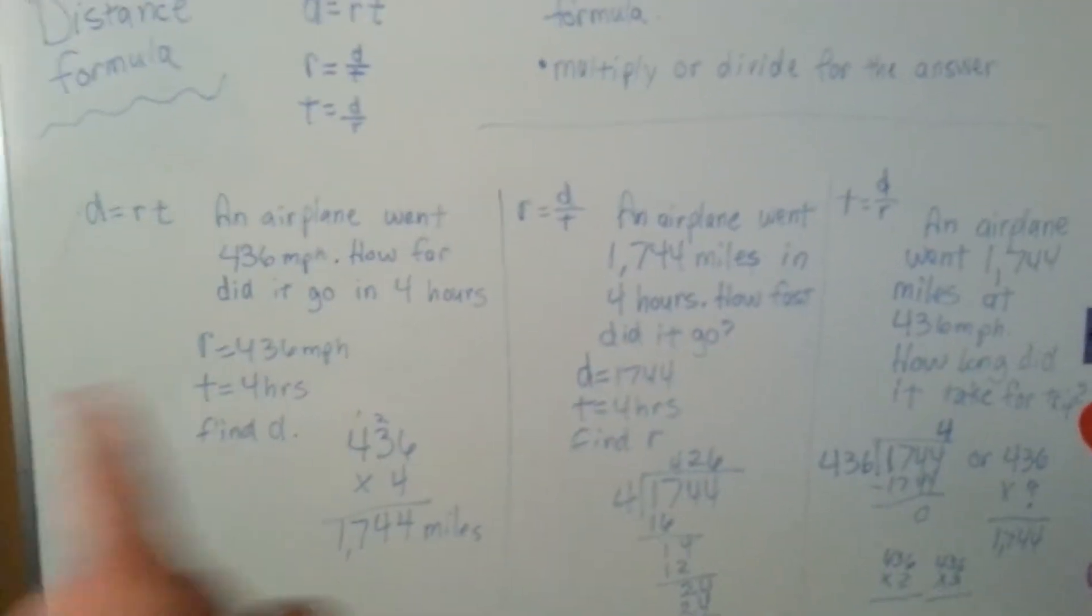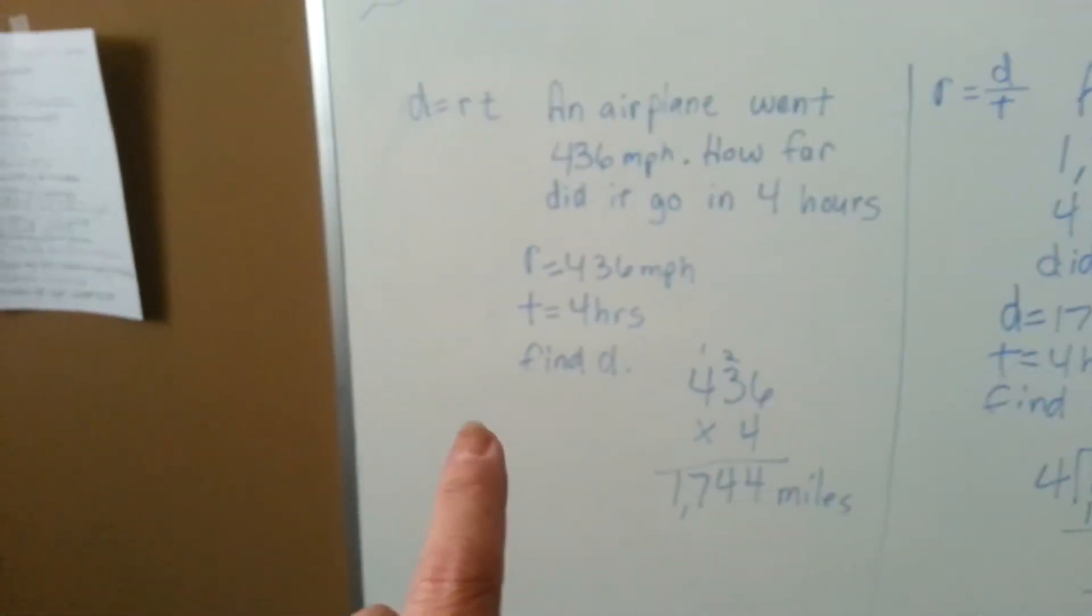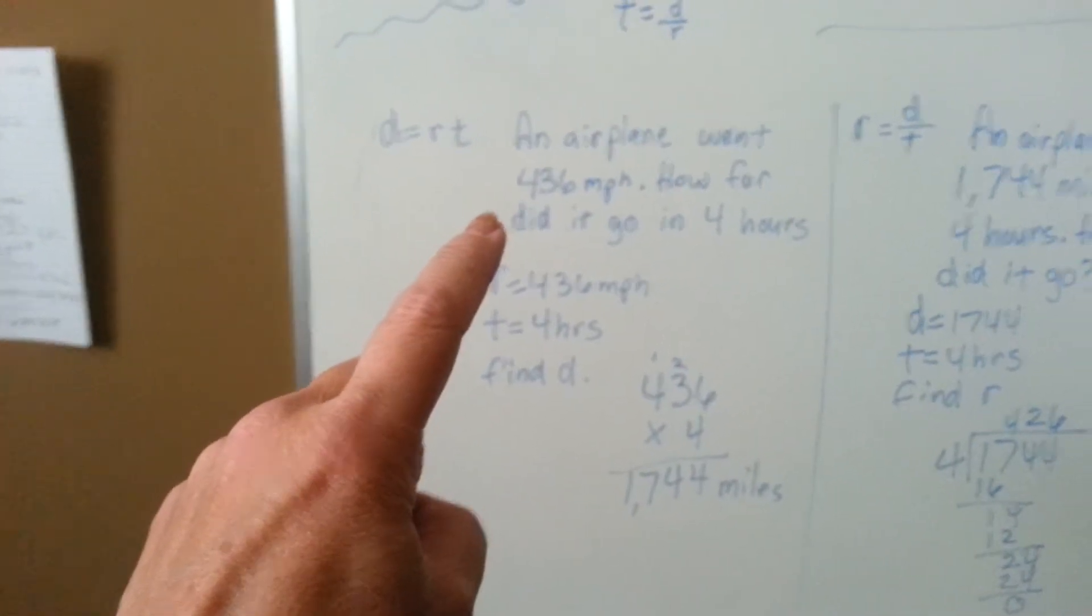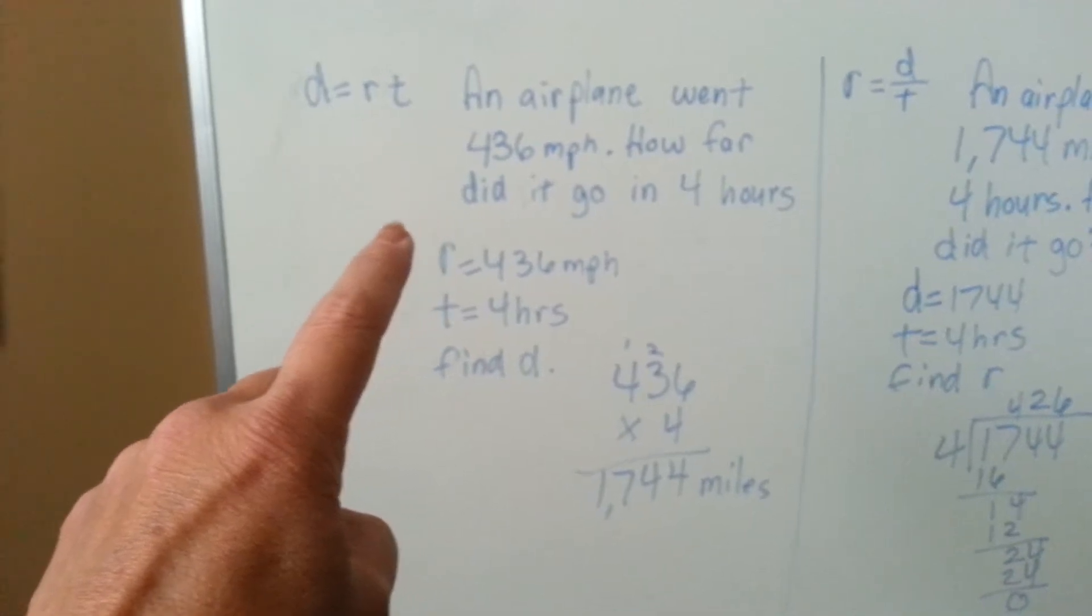I have an explanation of all three ways that it could be written with the same problem to make it easier to understand. An airplane went 436 miles an hour. How far did it go in four hours?